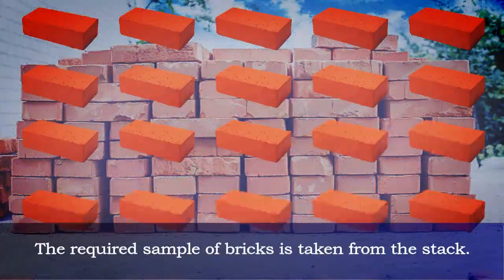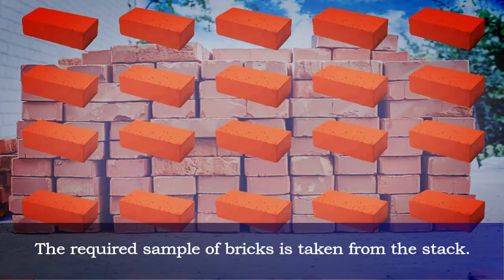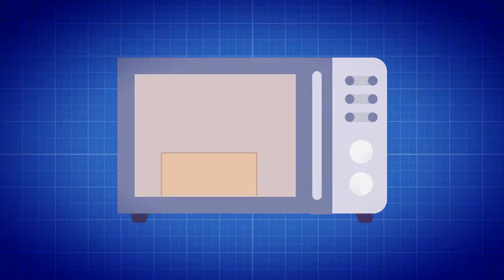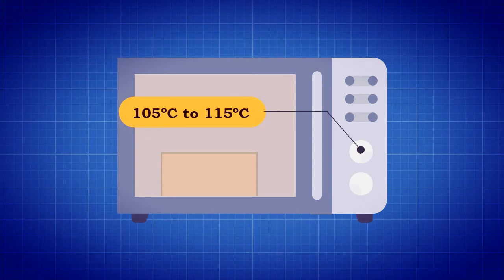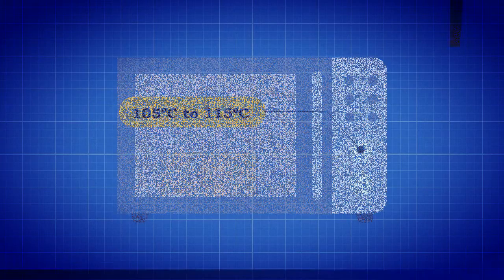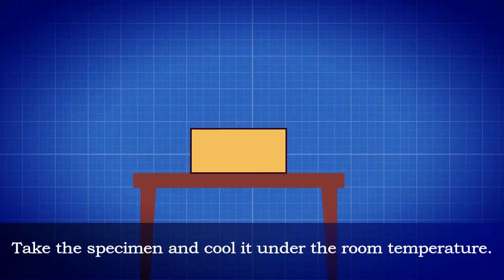The required sample of bricks is taken from the stack. The specimen is kept in a ventilated oven at a temperature of 105 to 115 degrees Celsius until it attains substantially constant mass. Take the specimen, cool it under room temperature, and obtain its weight, that is M1.